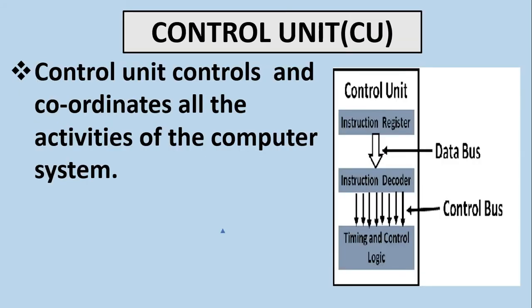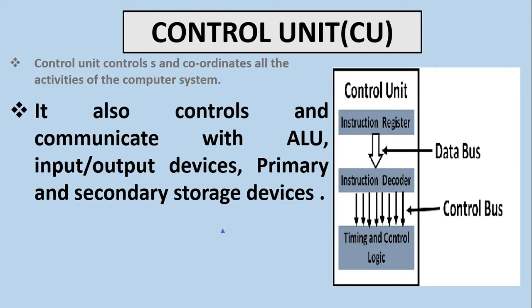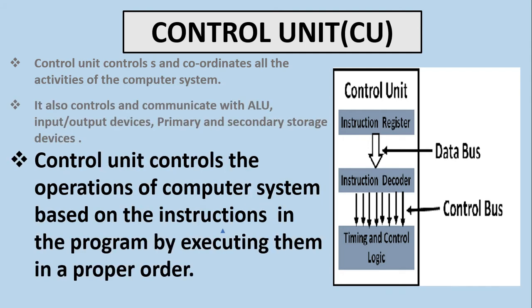The control unit controls and coordinates all the activities of the computer system. It also controls and communicates with the arithmetic logic unit, input-output devices, and primary and secondary storage devices. The control unit controls the operation of the computer system based on the instructions in the program by executing them in the proper order.